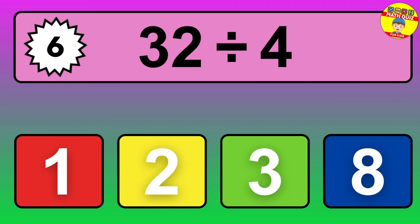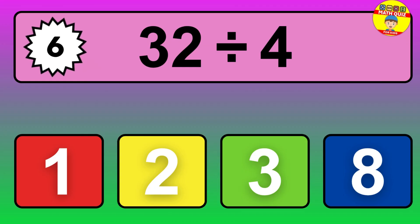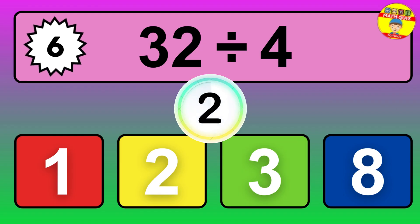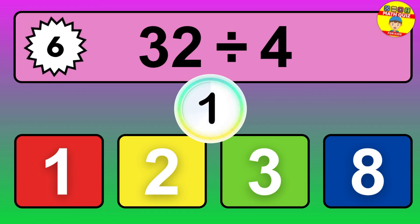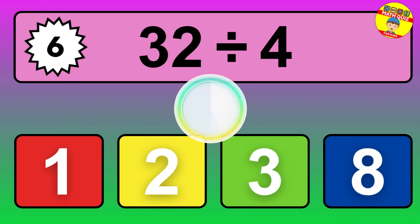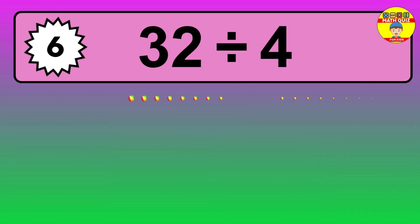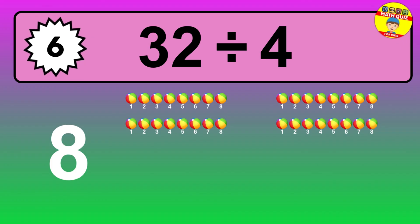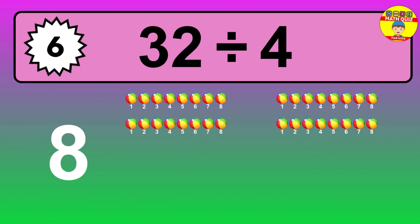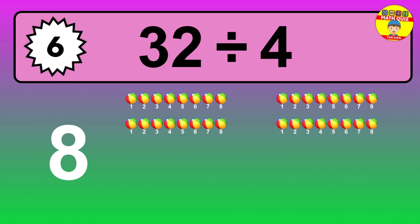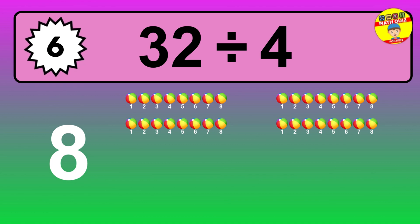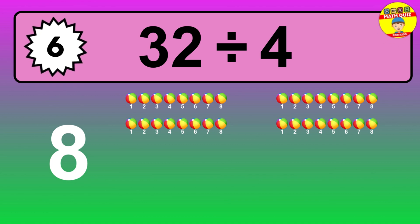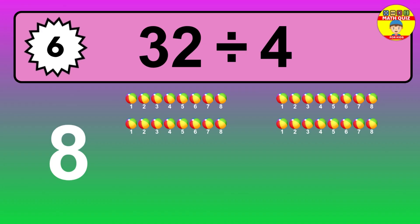32 divided by 4 — time to think. Let's go to the solution. Divide the number 32 by 4. Each group contains 4 units, so dividing 32 by 4 results in 8 equal groups. Thus, the result is 32 divided by 4 equals 8.